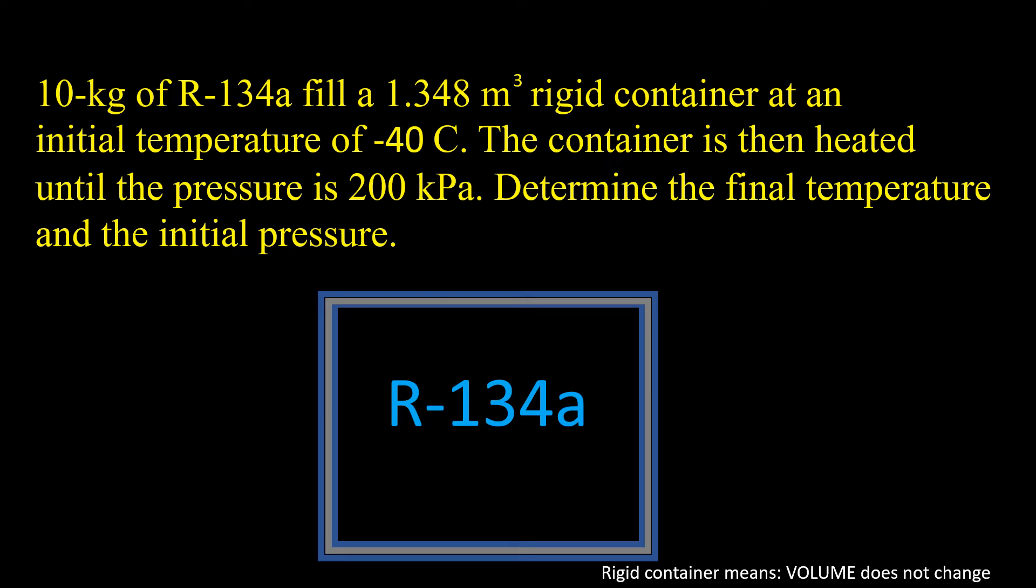Welcome back everyone. Let's take a look at this thermodynamics problem. We have a mass of 10 kilograms of refrigerant R-134a that fills a rigid container with a volume of 1.348 cubic meters. The initial temperature is negative 40 degrees Celsius. The container is heated until the final pressure is 200 kilopascals. We need to determine the final temperature and initial pressure.